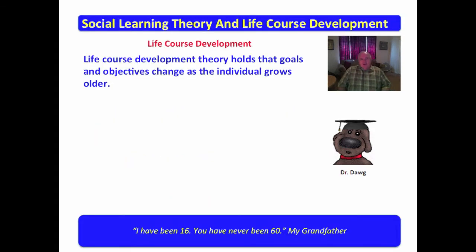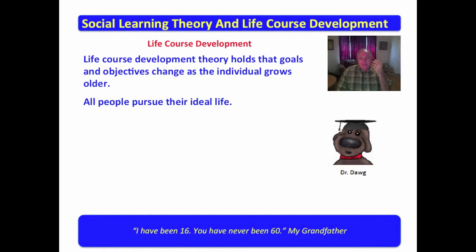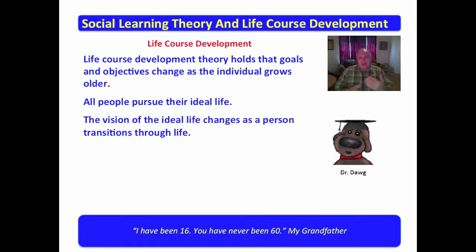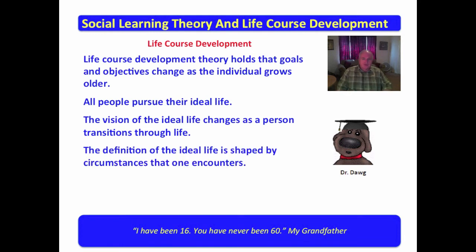Life course development theory holds that goals and objectives change as the individual grows older. It is also founded upon the concept that all people pursue their ideal life. If you take just a moment and think about it, you probably are in pursuit of an ideal life right now. You have something that you want out of life — some goals, some objectives — and that's what you're pursuing. The vision of the ideal life, according to life course development theory, changes as the person transitions through life. The definition of the ideal life is certainly shaped by circumstances that one encounters.